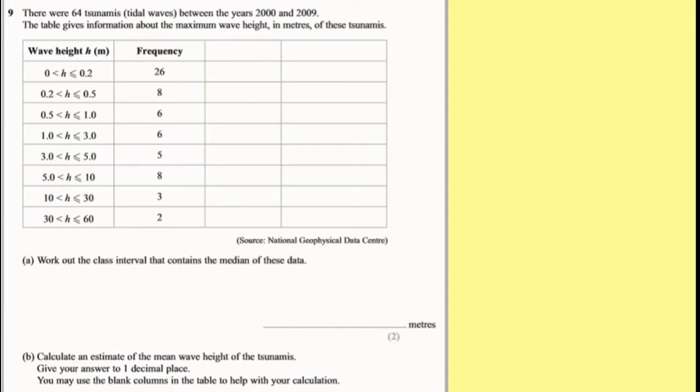So this one here, question 9, there are 64 tsunamis between the years 2000 and 2009. The table gives information about the maximum wave height in meters of these tsunamis. I always like these questions because they're actually real questions. Work out the class interval that contains the median of these data. So the median is the middle score, and it's going to be one of these. First thing, we need to work out how many people we are, so I need to add up my frequency column, which is 26 plus 8 plus 6 plus 6 plus 5 plus 8 plus 3 plus 2, which is 64.